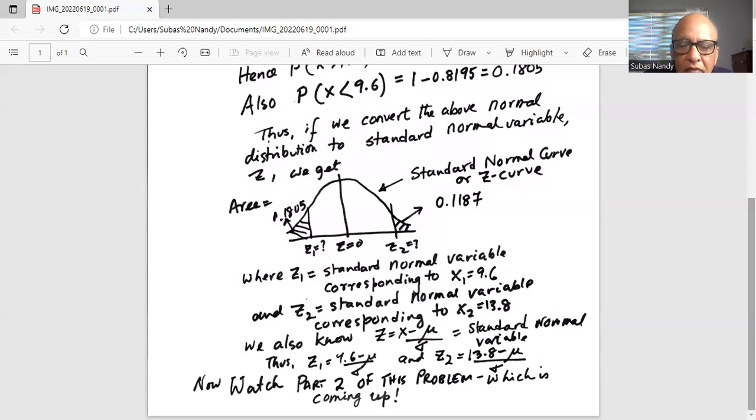We plug in the values: z₁ = (9.6 - μ)/σ and z₂ = (13.8 - μ)/σ. The question is how to find μ and σ. This will come up in part two of this problem, which is coming up. Please check that out.